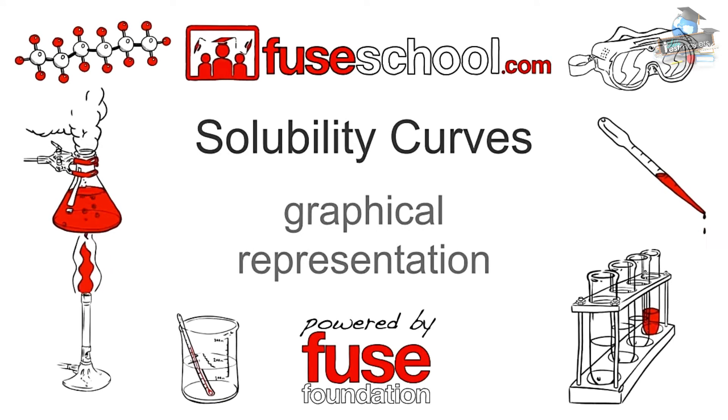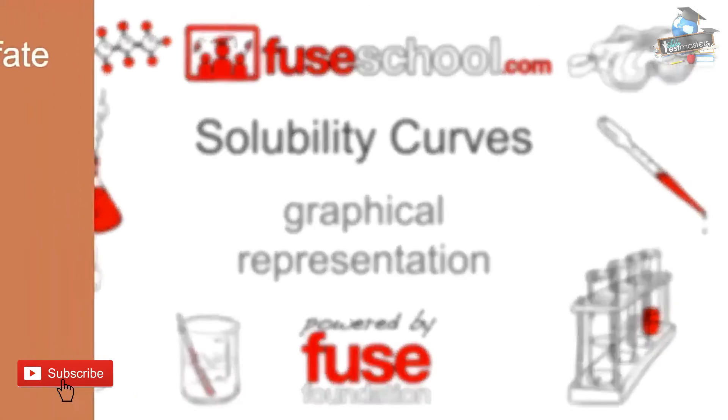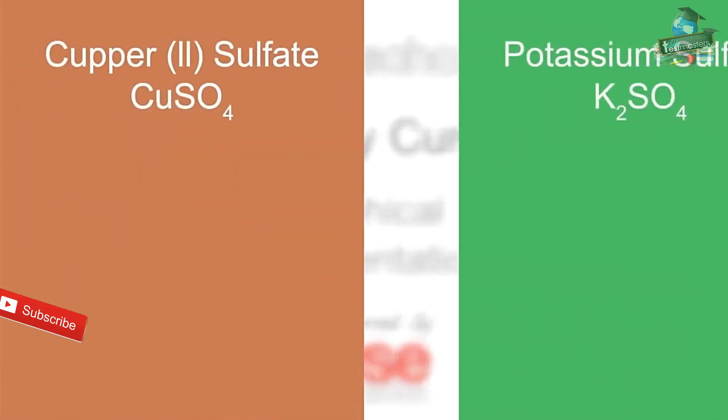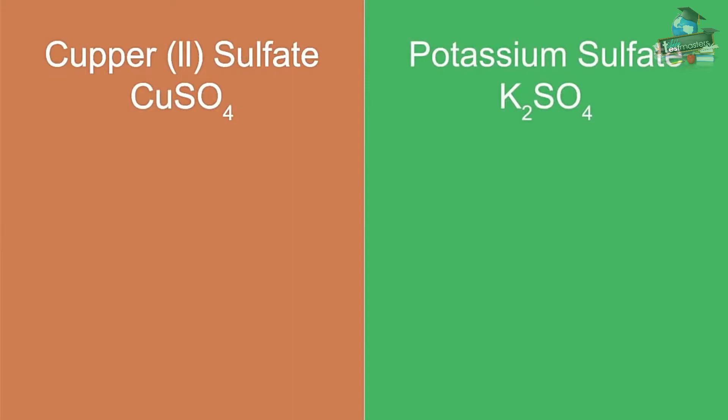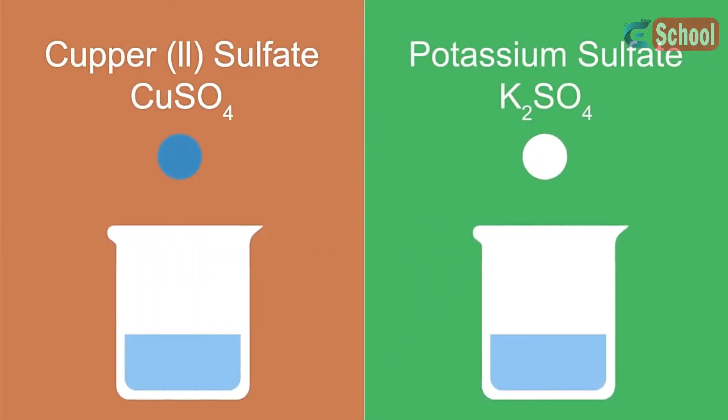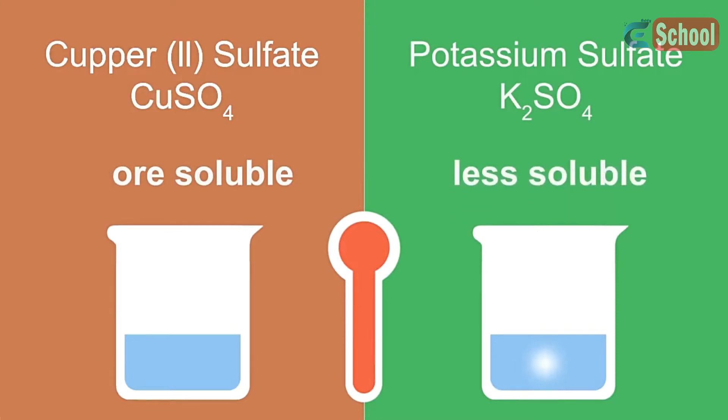If we were to compare copper(II) sulfate and potassium sulfate, we will find that one is bright blue and the other is white. If we try to dissolve them in water of equal temperature, we will find that copper(II) sulfate is a lot more soluble than potassium sulfate.